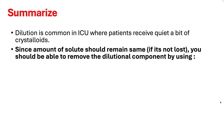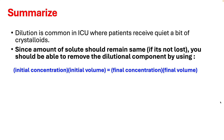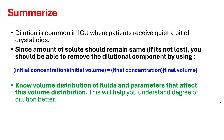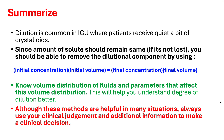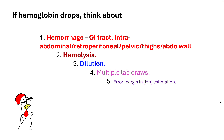To summarize: dilution is common in the ICU where patients receive quite a bit of crystalloid. Since the amount of solute should remain the same if you are not bleeding, you can remove the dilution component using our formula — initial concentration multiplied by initial volume equals final concentration multiplied by final volume. Know the volume of distribution of fluid and the parameters affecting it. Although these methods are helpful, always use clinical judgment and additional information. If hemoglobin drops in the ICU in the first 24 to 48 hours, it's okay to think about hemorrhage and hemolysis, but also pay attention to dilution, multiple lab draws, and the margin of error in hemoglobin estimation.